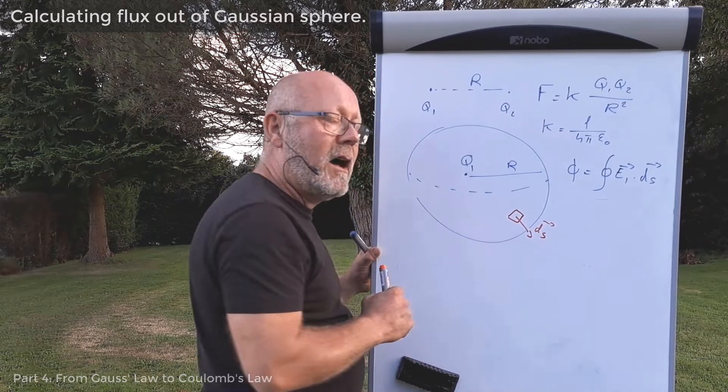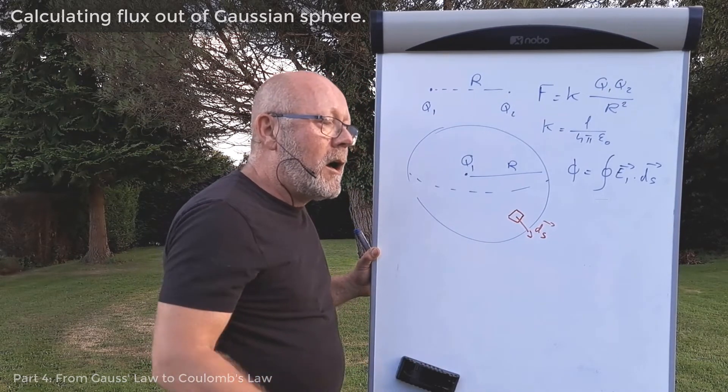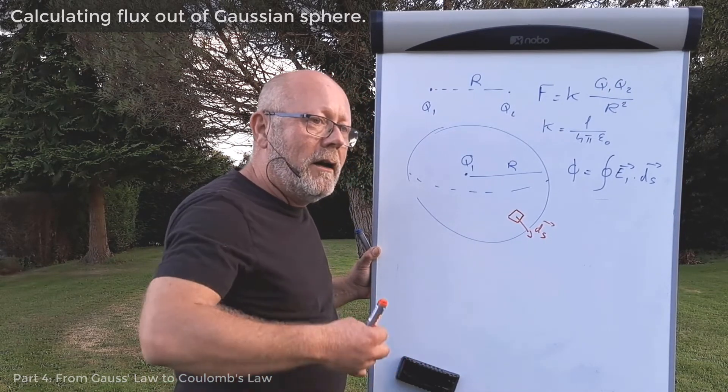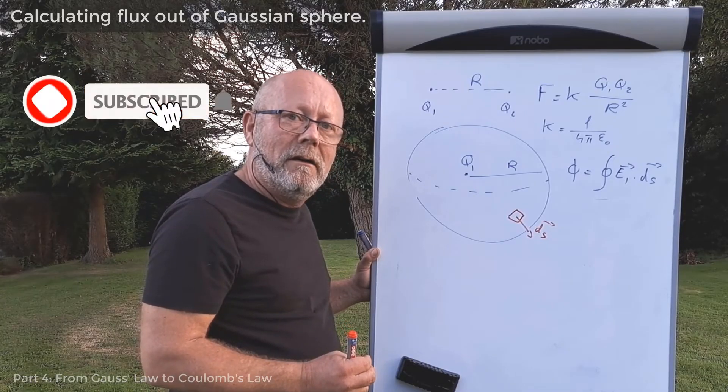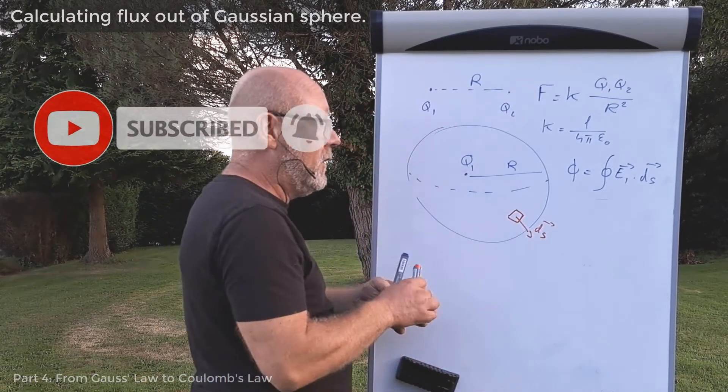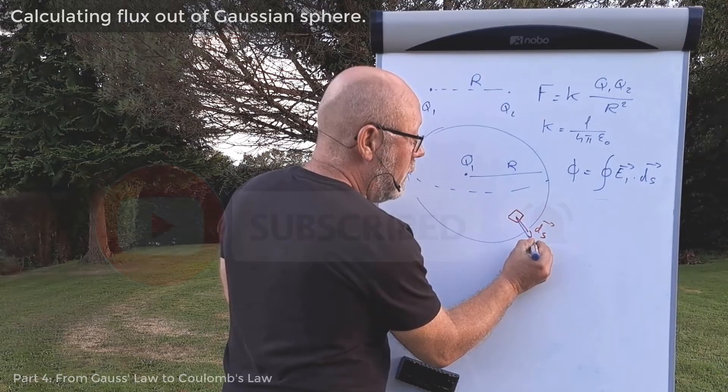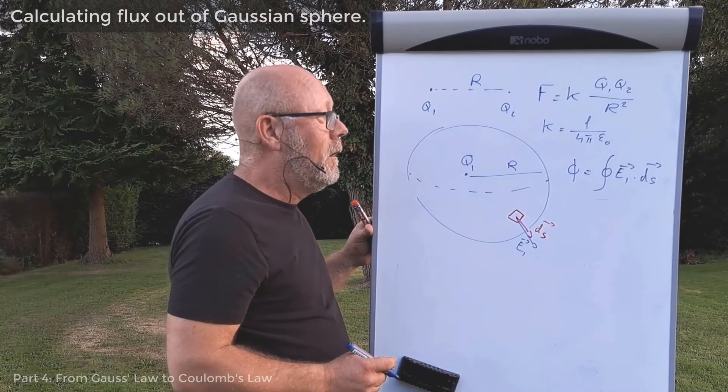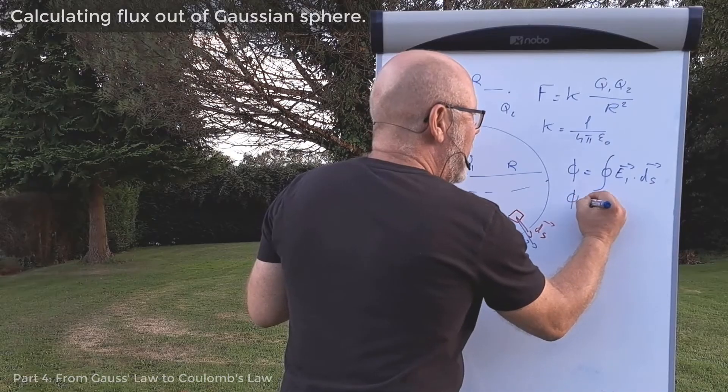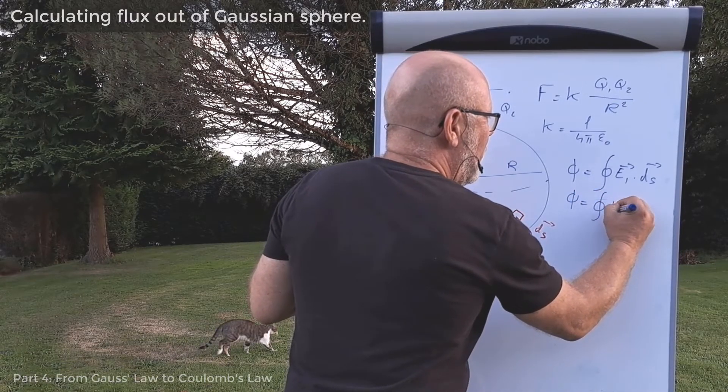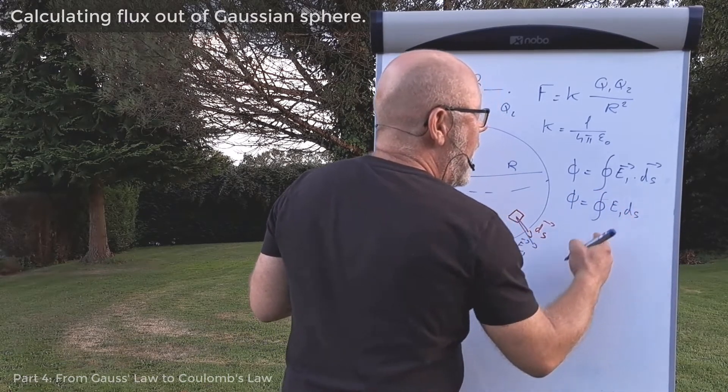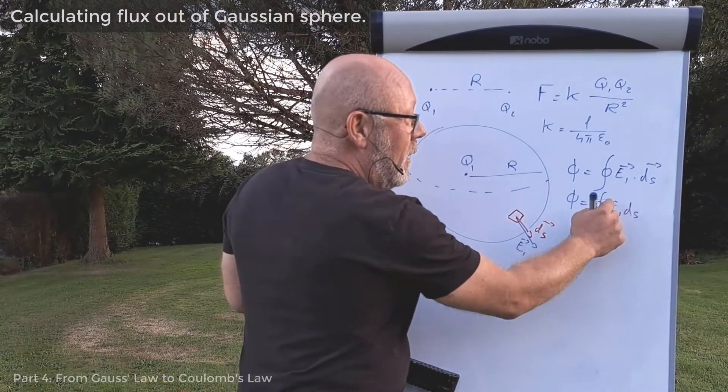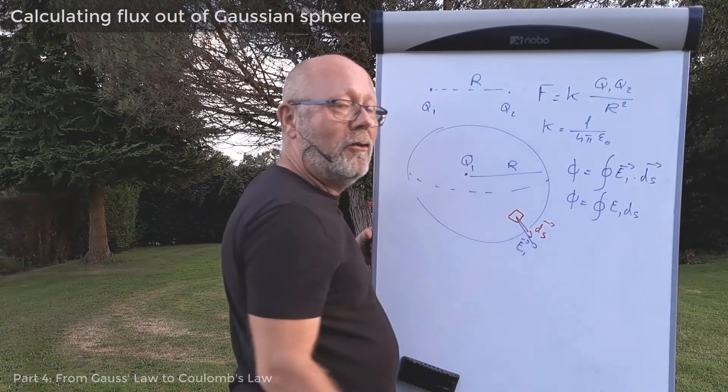Let's look at the charge Q1. Q1 is a punctual charge, so it generates a radial field, meaning the field lines originate from Q1 and go in all directions and are perpendicular to the surface of a sphere around it. So field lines and ds are aligned. Now an electric field strength is tangent to the field line, so it will also be aligned with ds, so E1 will be collinear with ds.